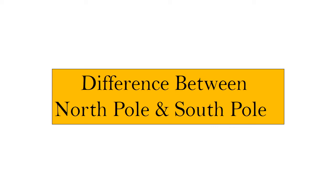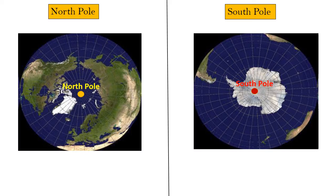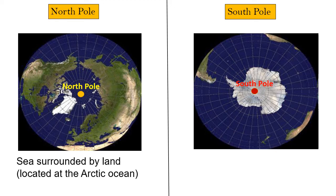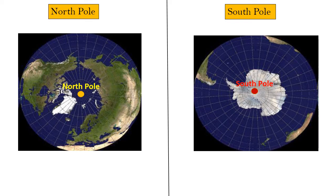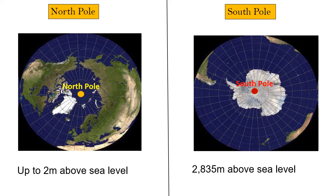Now let's focus on the main differences between the North Pole and South Pole. As you can see in this picture, the North Pole lies in the Arctic Ocean — that is sea surrounded by land — but the South Pole lies in the continent of Antarctica, which is land surrounded by sea. Second, the North Pole is at a lower altitude of 2 meters above sea level, while the South Pole has an extremely high altitude of 2,835 meters above sea level.